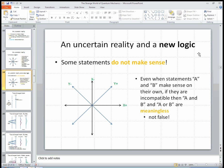There are some statements that we can say that don't make sense. Now, we know that that's true. I can just say gibberish and it certainly won't make sense. But here's what's weird about it. Even when two statements, let's say A and B, make sense on their own,